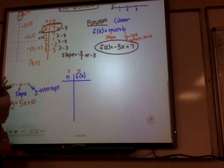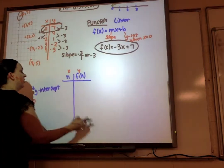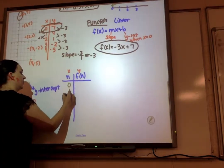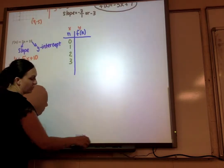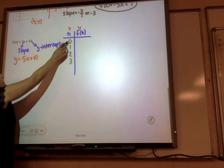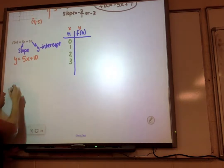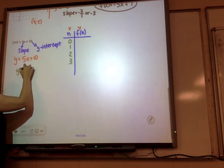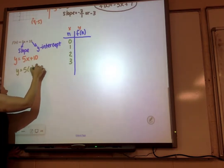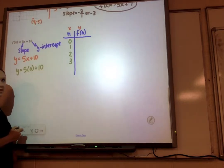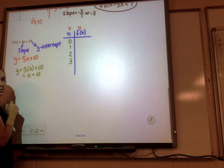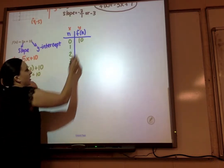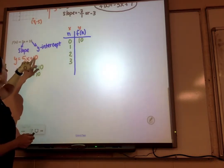Function notation. y equals mx plus b notation. So to get values for our table, we can put those values in for x or n. So y equals 5 times 0 plus 10 equals 0 plus 10, which is just 10. And that makes sense, because that's our y-intercept.